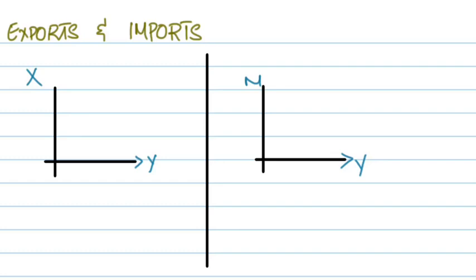So if I sketch the curve for exports, this is what it looks like — a simple straight curve independent of changes in equilibrium income.